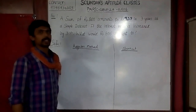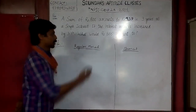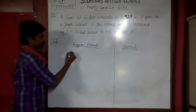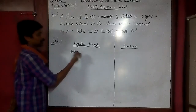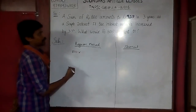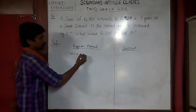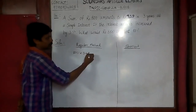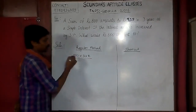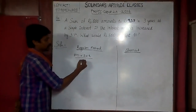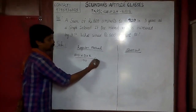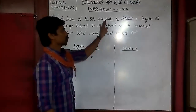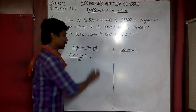Using the Simple Interest formula: SI = PNR / 100. The Principal amount is 800, number of years is 3, and we need to find the rate percentage R. PNR/100 equals the interest. What is the interest? 800 amounts to 920, so the interest is 120.